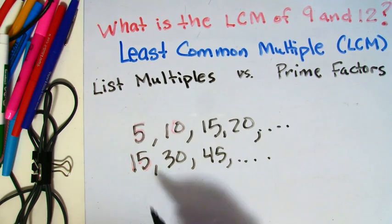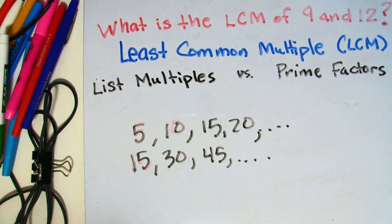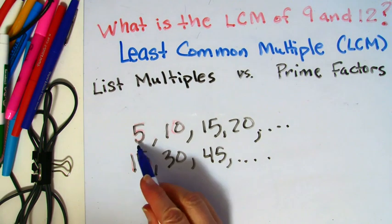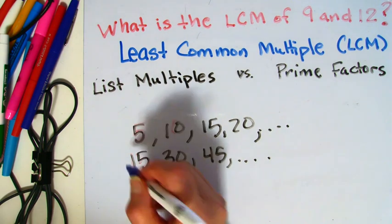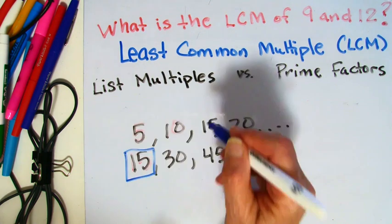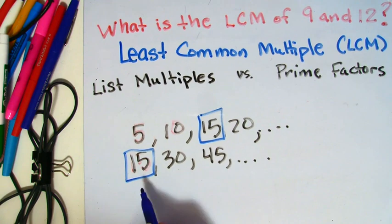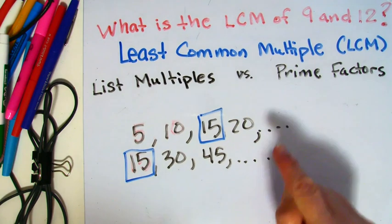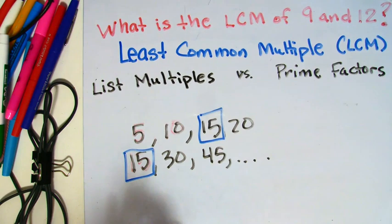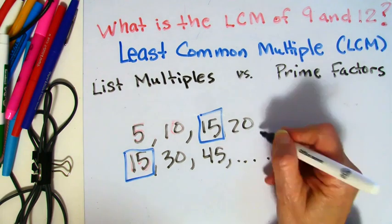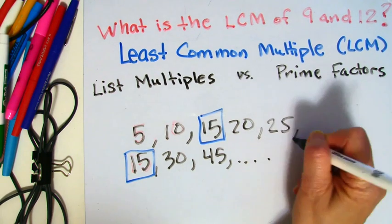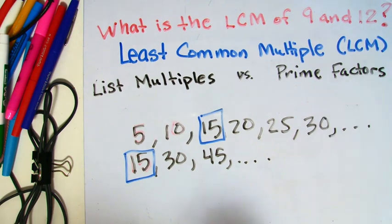So you can see that both of these numbers, the 5 and the 15, have a 15 as a common multiple. And it happens to be the lowest common multiple. Now, if I continued on here with the 5s, I'd get 25, 30, and so on.